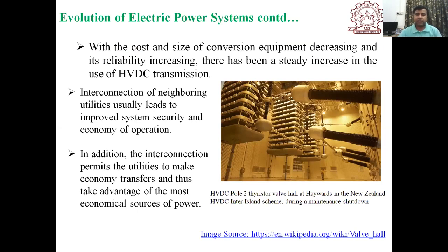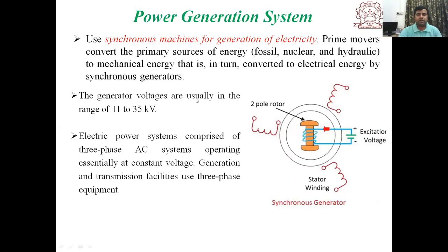With the advent of thyristor valve converters, HVDC became even more attractive. The first application of an HVDC system using thyristor valves was in 1972 — a back-to-back scheme providing an asynchronous tie between the power systems of Quebec and New Brunswick. With decreasing cost and size of conversion equipment and increasing reliability, there has been a steady increase in the use of HVDC transmission worldwide.